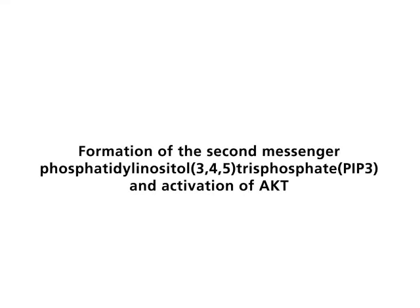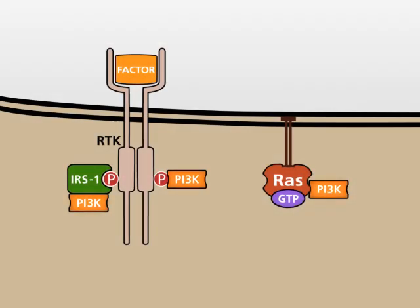Formation of the second messenger phosphatidylinositol 3,4,5-trisphosphate, PIP3, and activation of AKT. At the second level of the pathway, the second messenger phosphatidylinositol 3,4,5-trisphosphate, or PIP3, is formed.